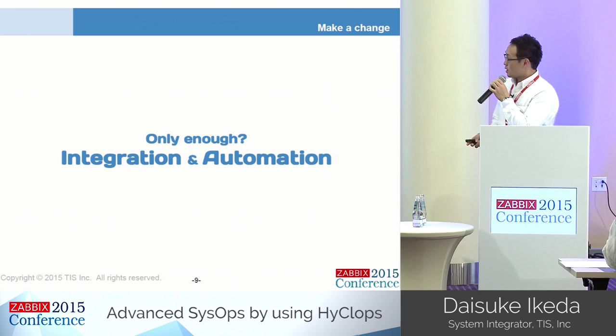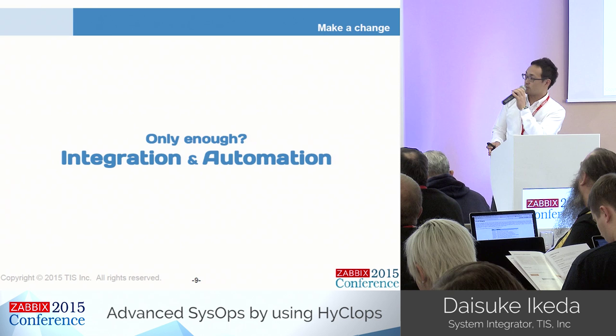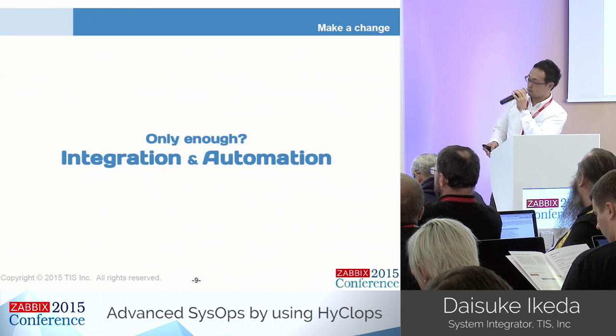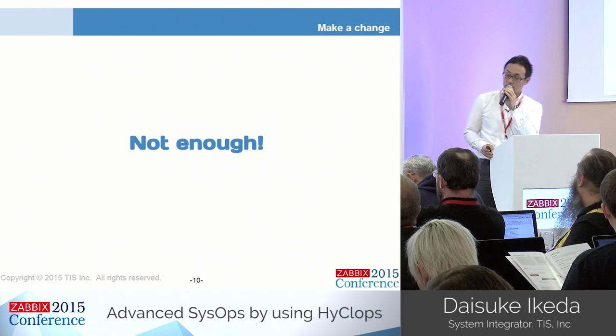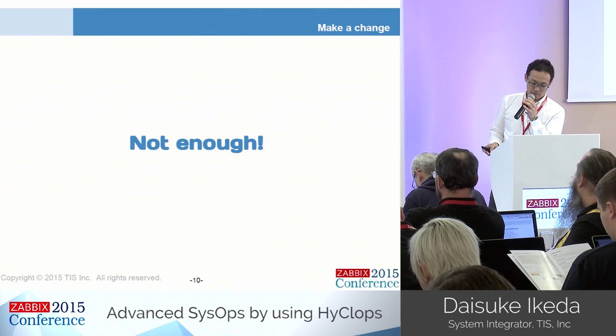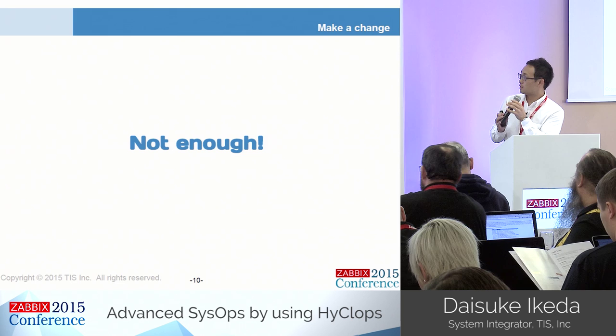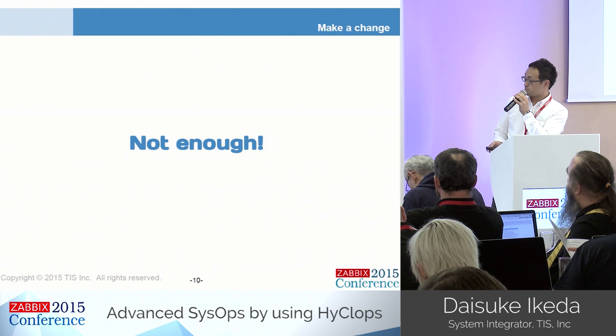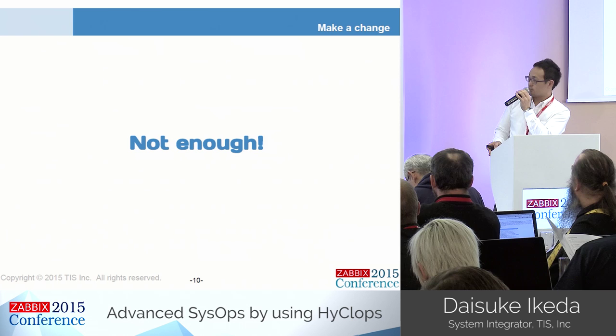As we developed such a tool, we tried to reconsider: is it enough to simply integrate and automate tasks which have been executed manually? I think not enough. There is no change in the internal process — the only difference is whether a human does it or program code does it. In Zabbix 2.2, VMware auto-monitoring features have been implemented, so we think other value is required for Hycrops.